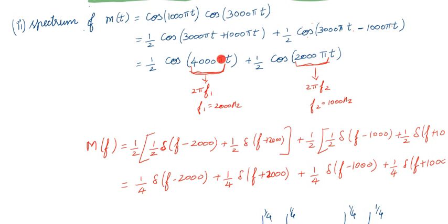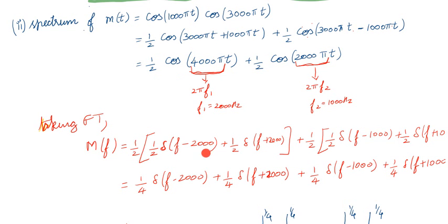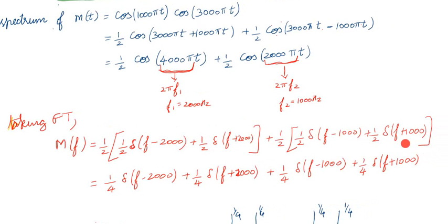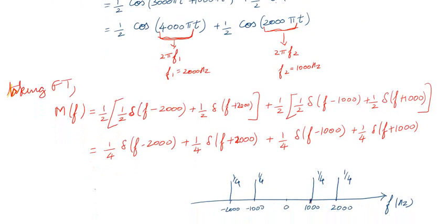From this expanded form we identify the frequencies. For cos(4000πt), we have 4000π = 2πf_1, so f_1 = 2000 Hz. For cos(2000πt), we have 2000π = 2πf_2, so f_2 = 1000 Hz. Now we take the Fourier transform of this expression.